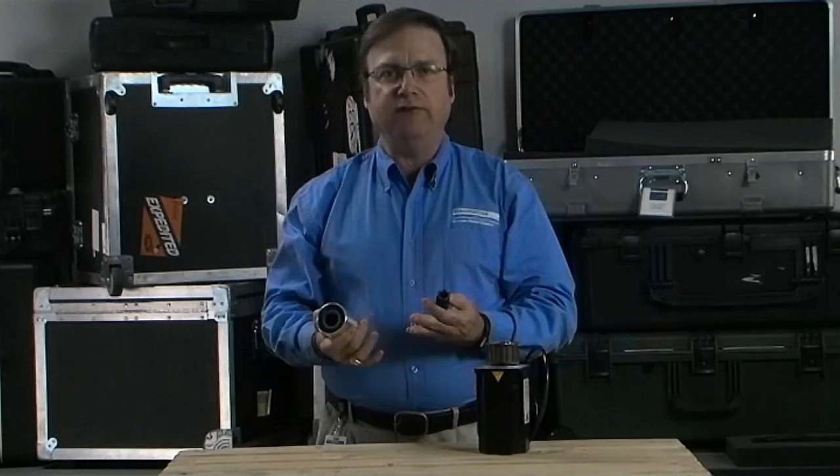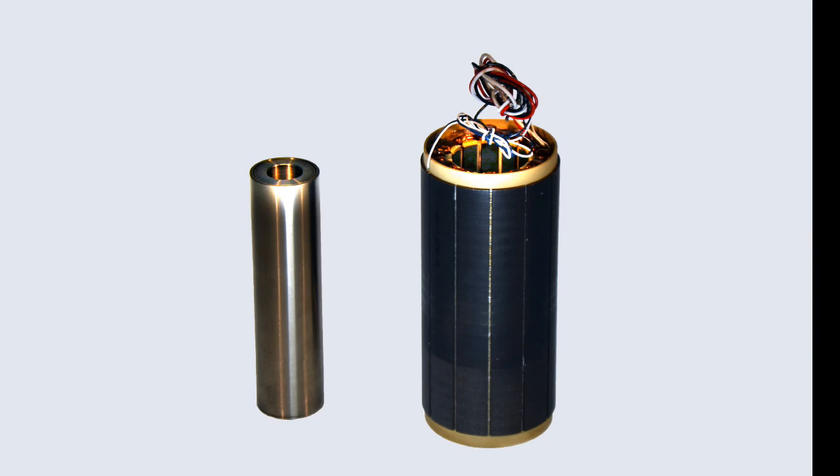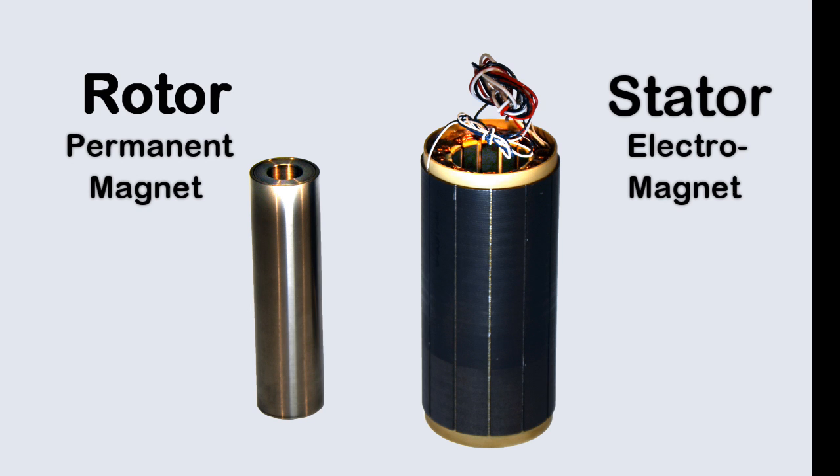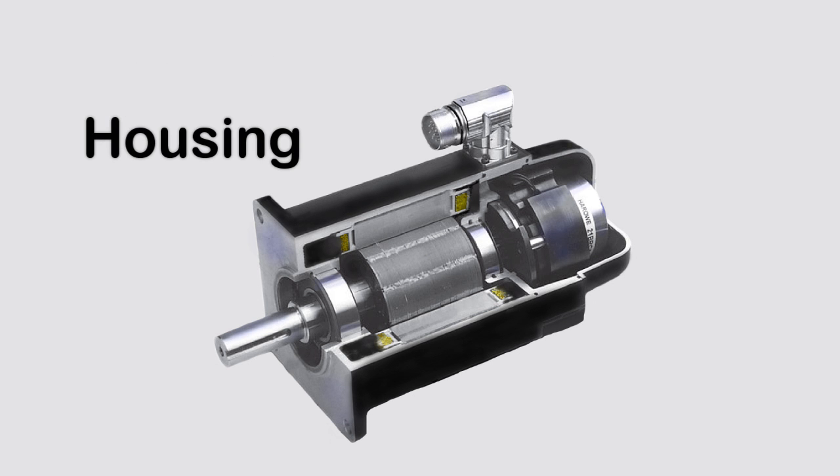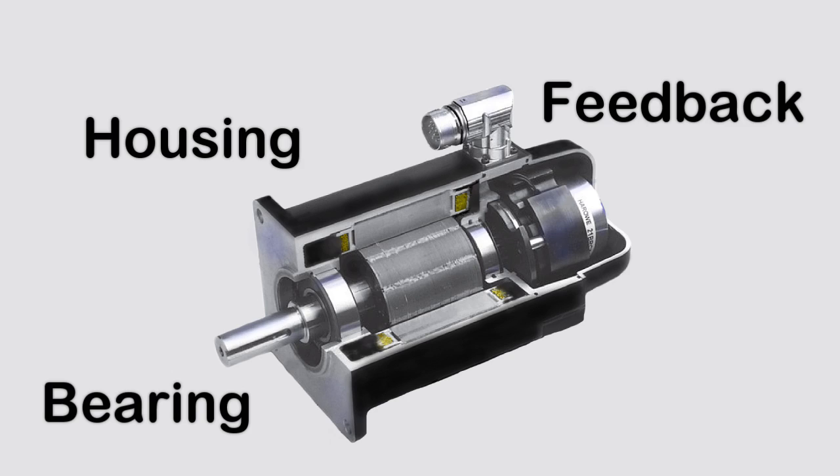But even with all of these benefits, some engineers have concerns about the difficulty of mounting a frameless motor into their application. A frameless motor comes as a part set which includes the stator and the rotor. These two parts are the permanent magnets and electromagnets that make up the motor. Missing are the housing, bearing and feedback device which are part of the machine.